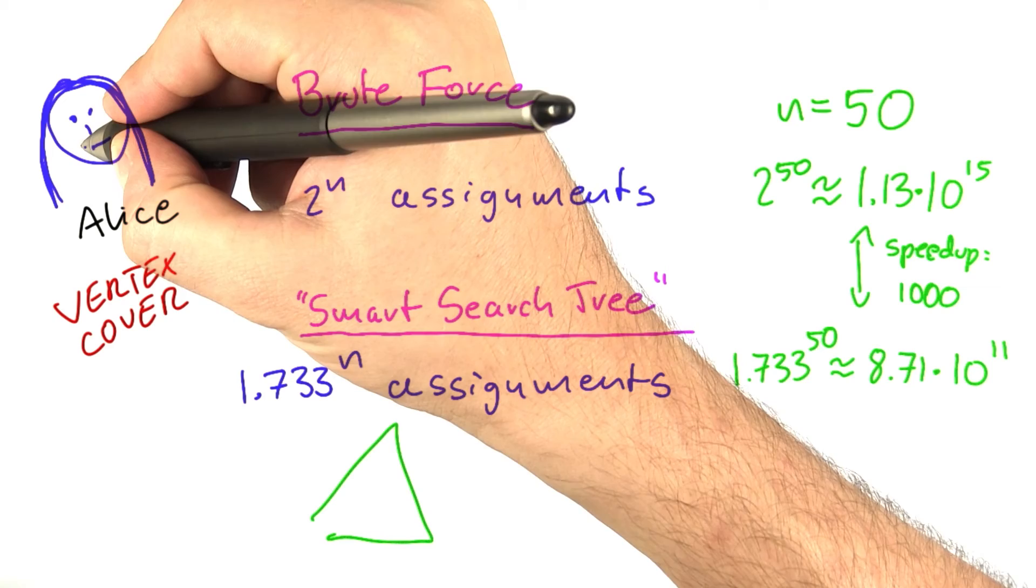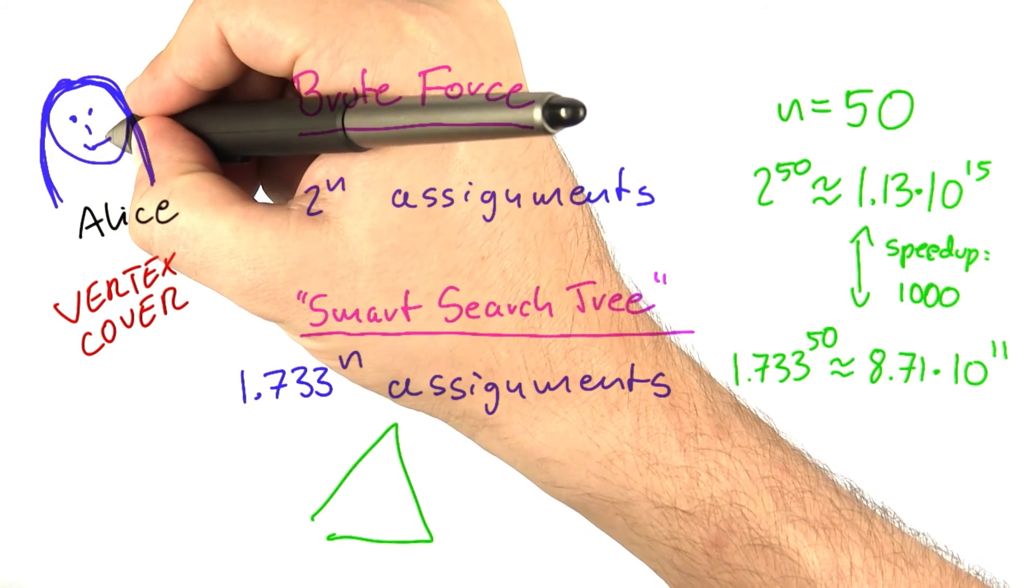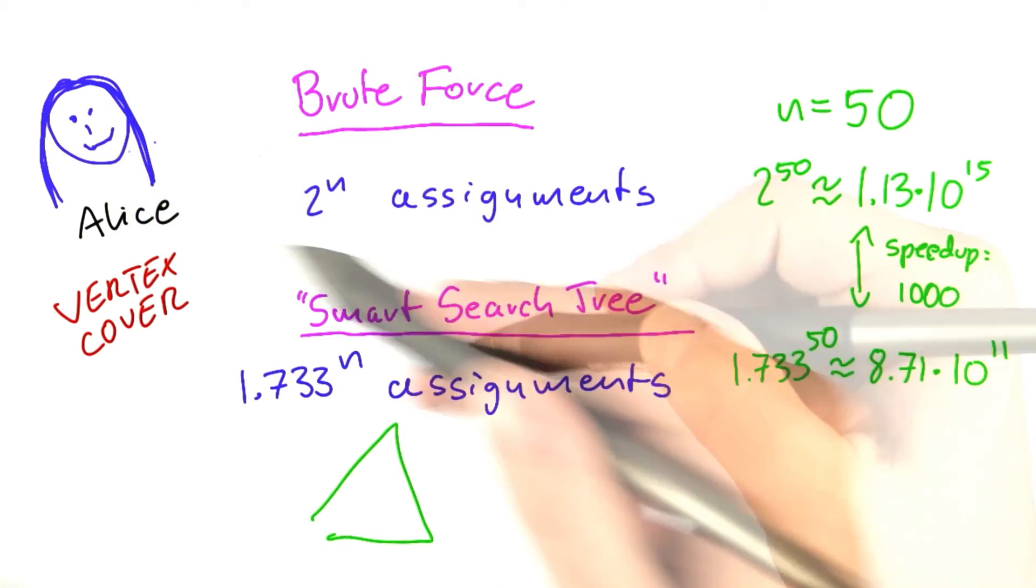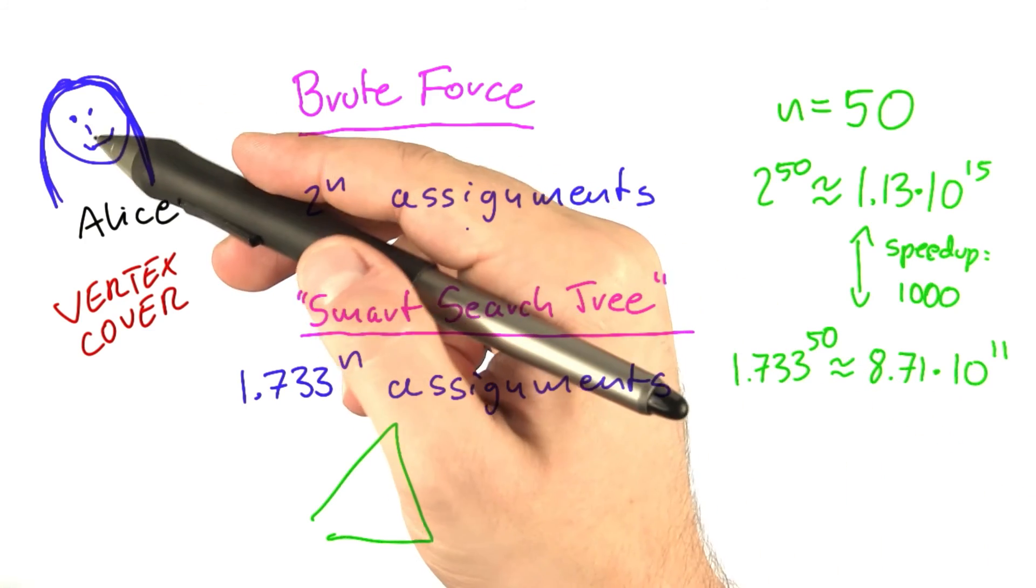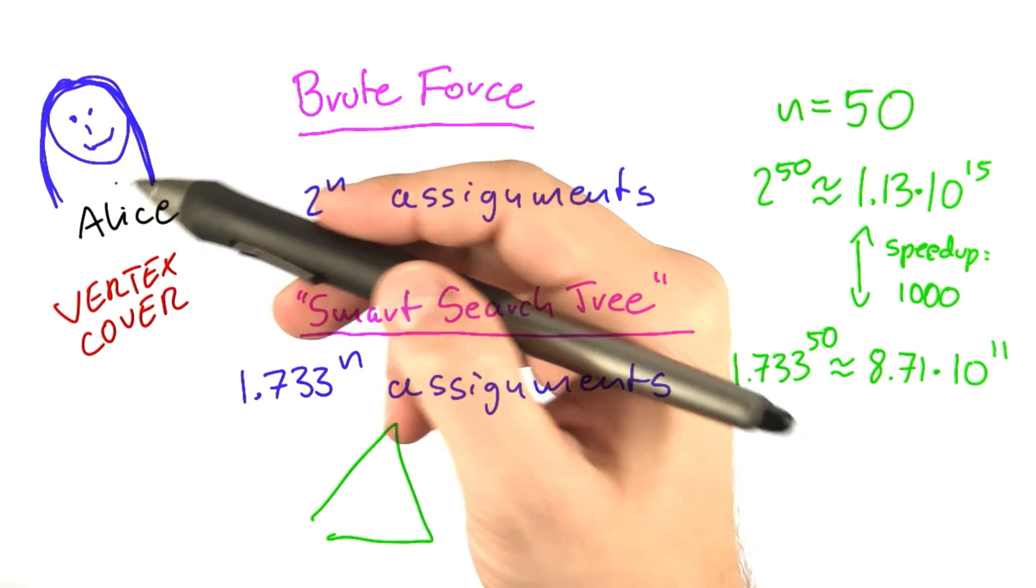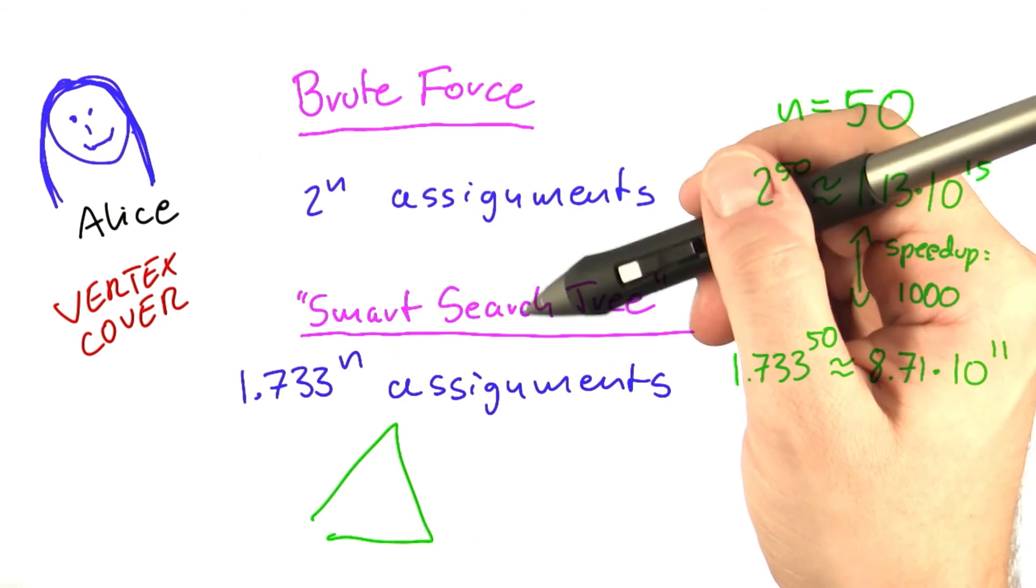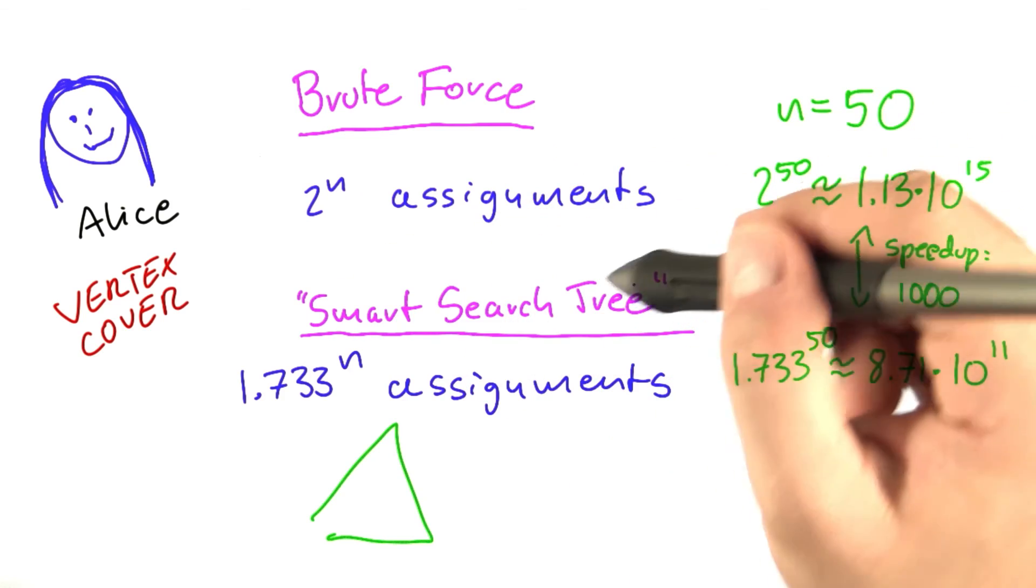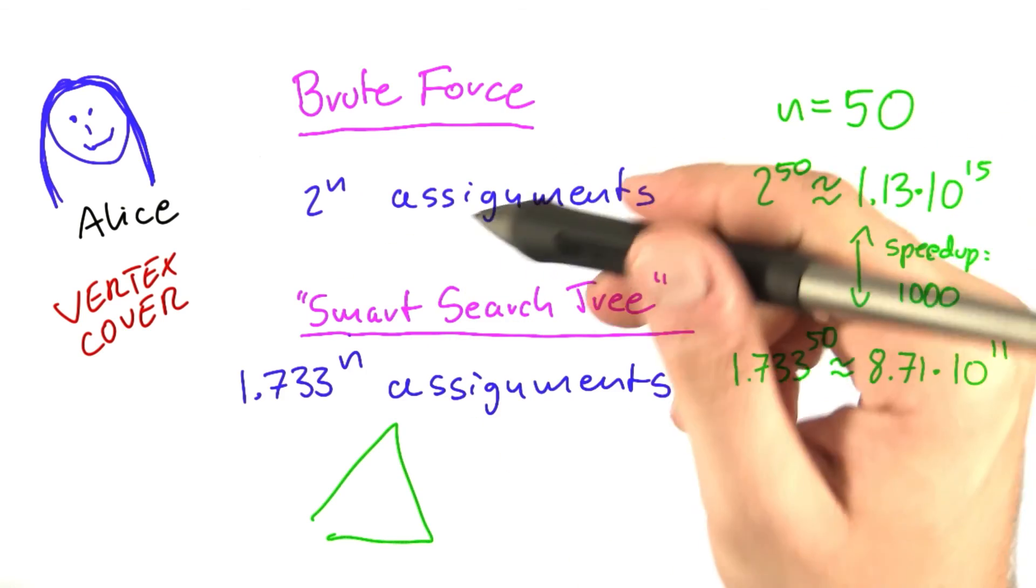But of course, there's a little hope already, because we haven't really fully explored search trees yet. Maybe it's going to get even better for her. But before we continue helping Alice, let's have a look at Bob and Carol and see if we can apply smart search trees also for their problems. Independent set and clique.